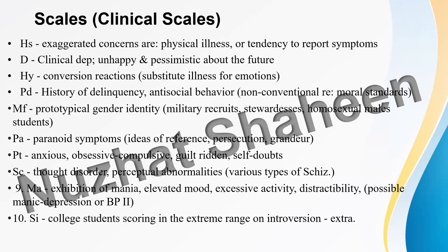The most frequent deviations from social norms seen in high PD scorers include lying, theft, alcohol or drug addiction, and sexual immorality. Some active professional persons have high PD scores but their transgressions, if any, are either disregarded by others or effectively concealed.